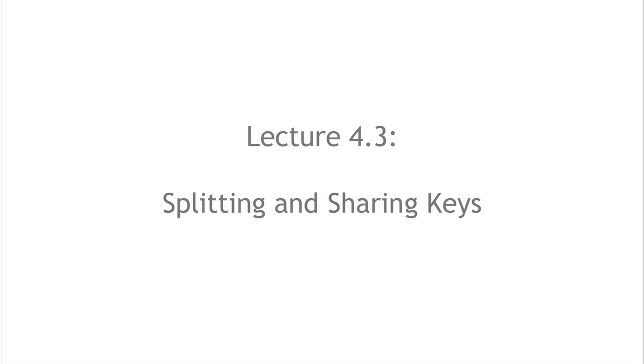In segment 4.3, we'll talk about how to share and split keys. Up to now, we've talked about different ways of storing and managing secret keys, but we've always put a key in a single place — whether that's locked in a safe, in software, or on paper. Storing the key in one place leaves us with a single point of failure, so that if something goes wrong with that single storage place, we're in trouble. We'd like to take a key and split it up into pieces and share those pieces around to avoid the single point of failure problem.